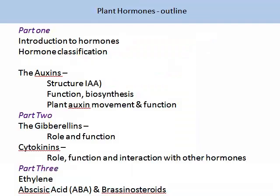We will present the topic on plant hormones today in three parts. In part 1 we will cover an introduction to plant hormones and hormone classifications, their generic role in plant growth and development. Then we will look at the hormone group auxin, one of the most important hormone groups — its role, biosynthesis, movement and function in plants. In part 2 we will look at gibberellin and cytokinin, their role, function and interaction with other hormones. In part 3, we will look at ethylene, abscisic acid, ABA and brassinosteroids.